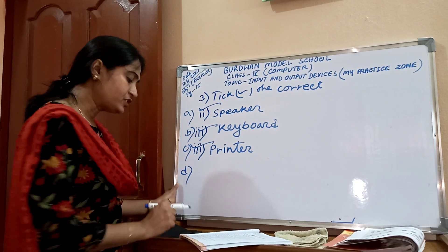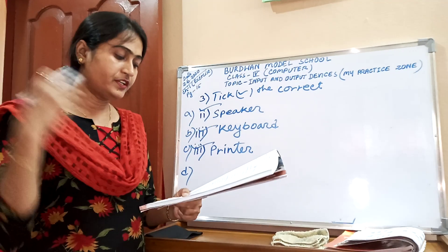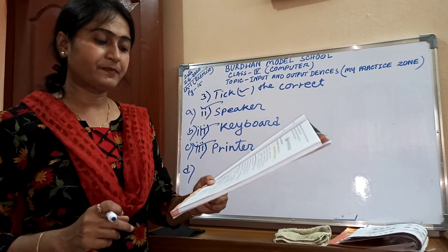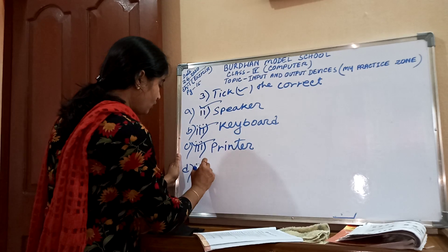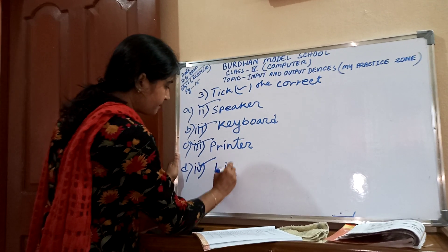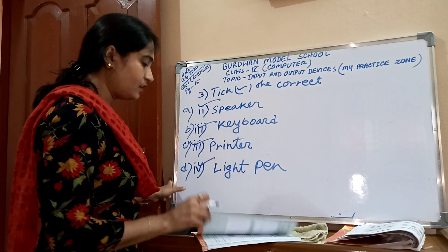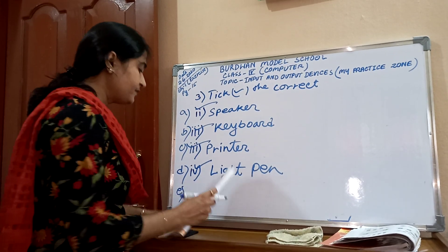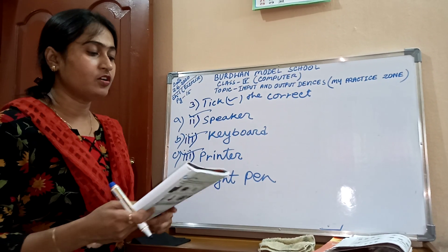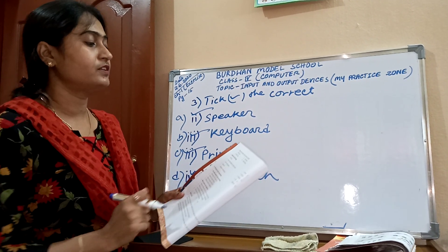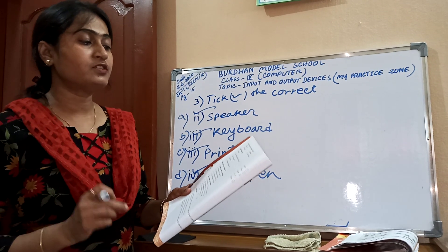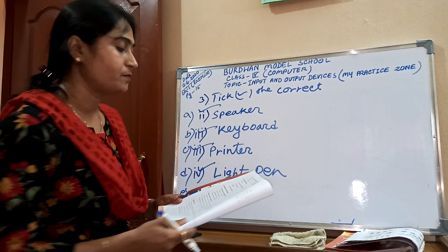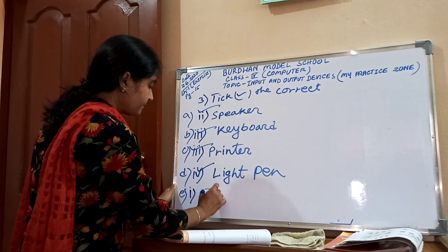Number D: Which of the following is used for drawing objects on the screen? Joystick, keyboard, web camera, light pen — we all know light pen, option 4 is the correct answer. Number E: What is the output on the monitor called? Soft copy, printout, hard copy — the output on the monitor is called soft copy, option 1.